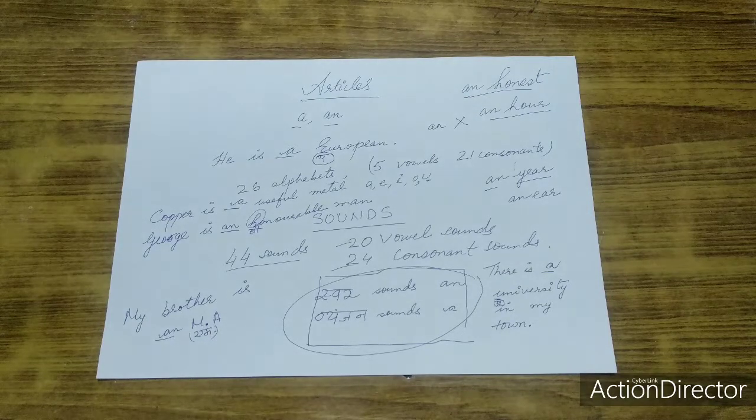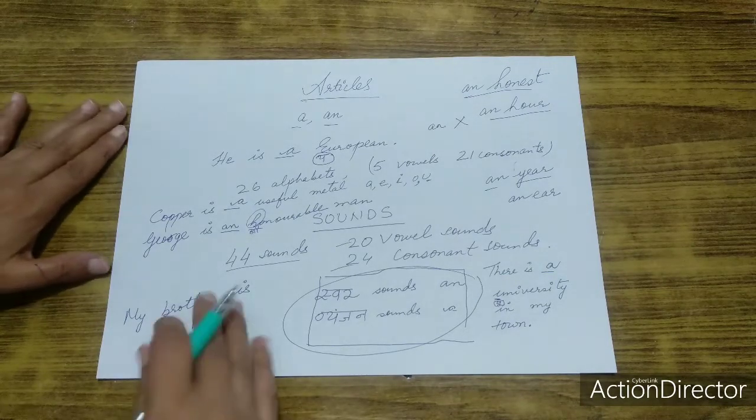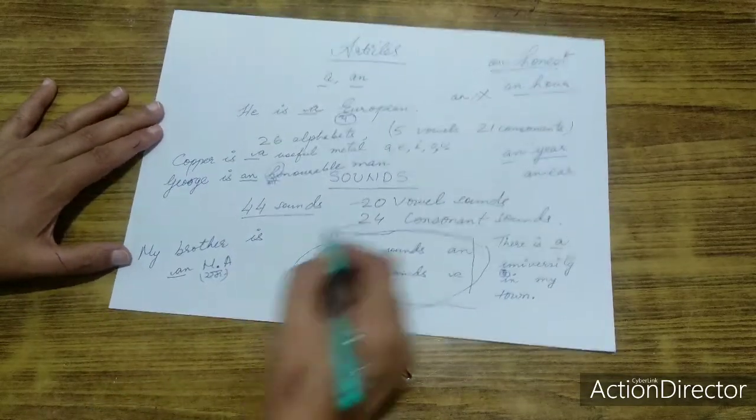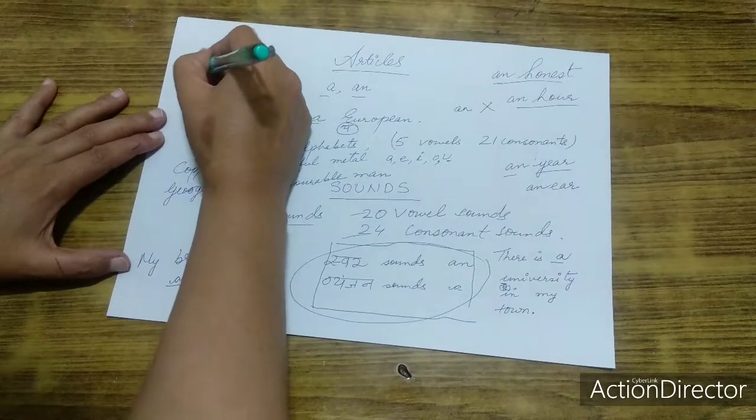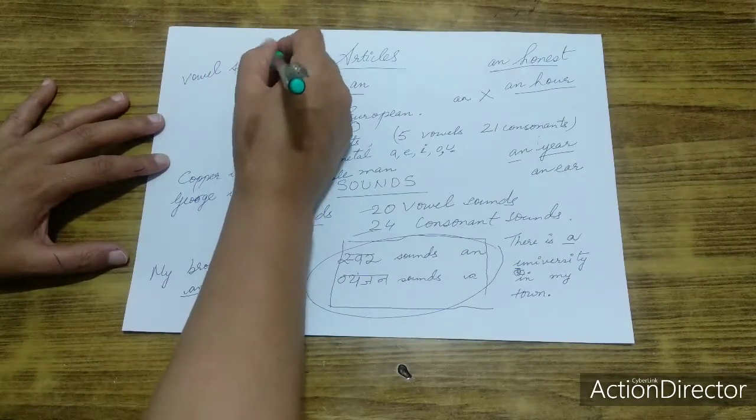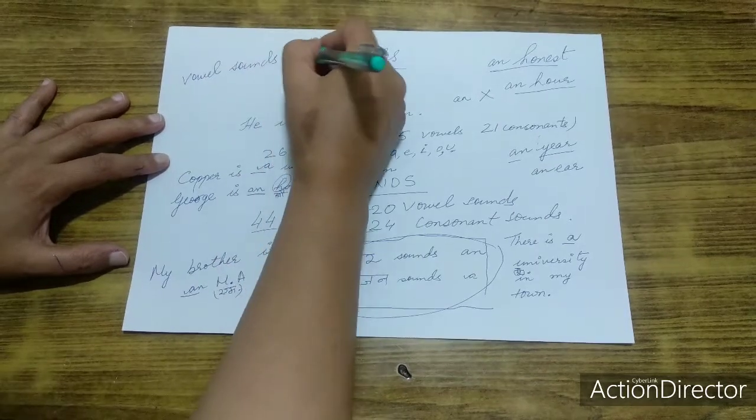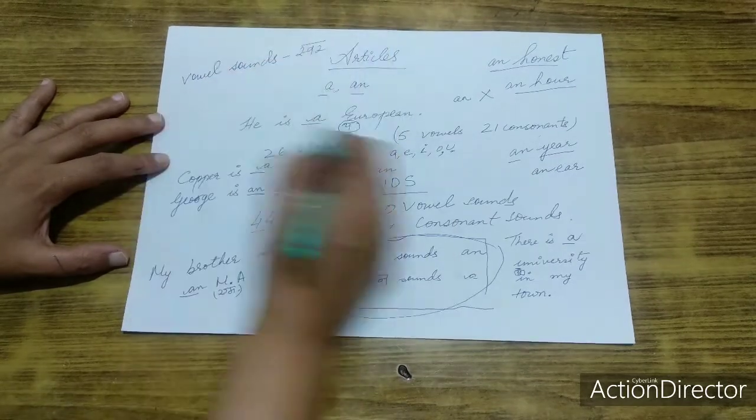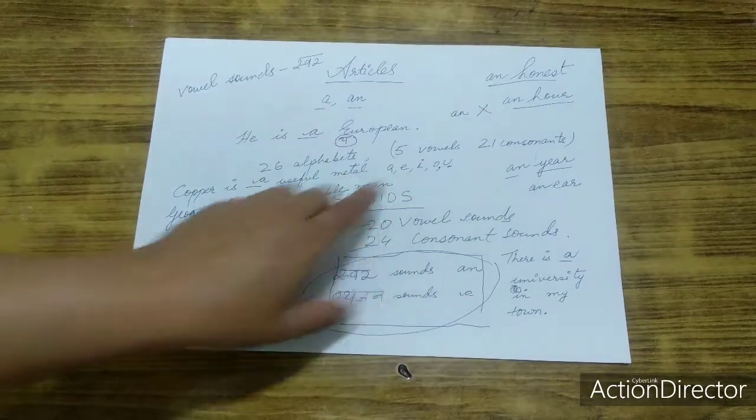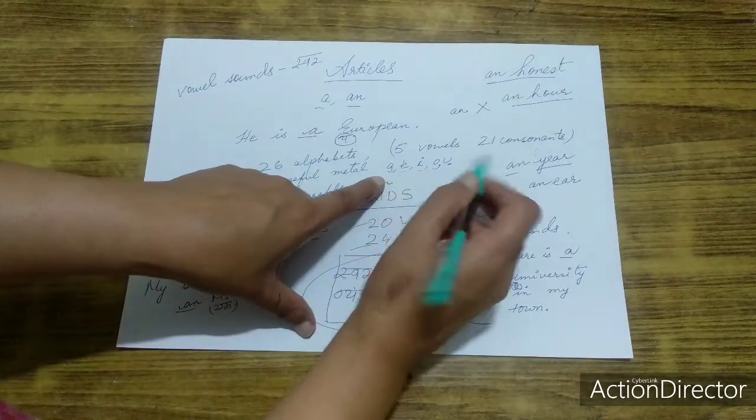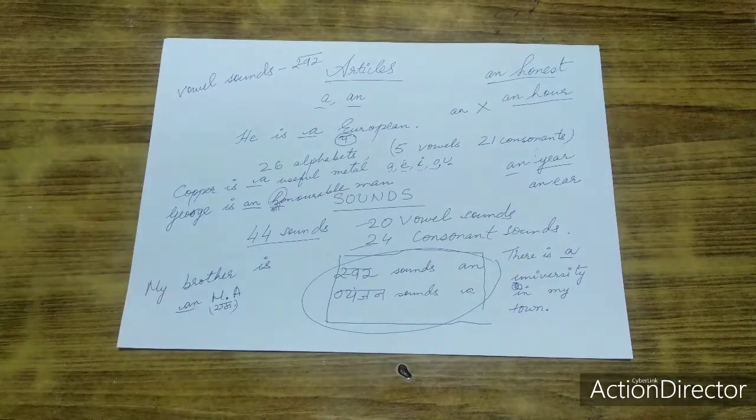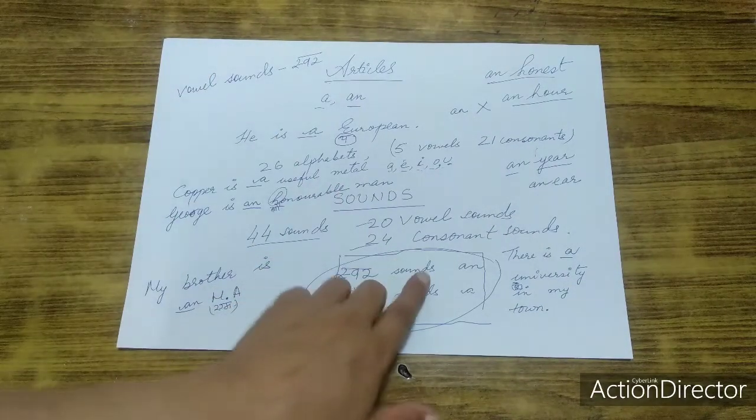To conclude, now once again I will say that all the vowel sounds, which are our Hindi swars, vowel sounds. Where confusion was being created is when I told you we take vowels A, E, I, O, U, but don't take the words, what do you have to take? You have to take their sounds.